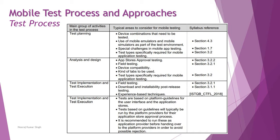Test types specifically required for mobile application testing were just recently covered as part of this same chapter. When it comes to analysis and design, we include app store approval testing, field testing, and device compatibility — the kind of labs to be used — which we'll be talking about in the upcoming chapter. There are a few topics still to be discussed, so device compatibility and kinds of labs to be used will be taken into account in the coming chapter.